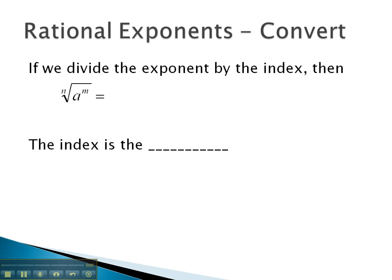We have seen this pattern throughout this unit, that if we divide the exponent by the index, then for an expression such as this, a would be our base, and we would divide the exponent m by the index of n. This gives us a rational or fractional exponent on the a.